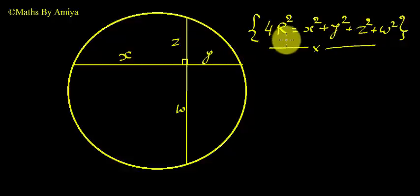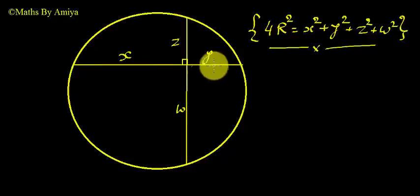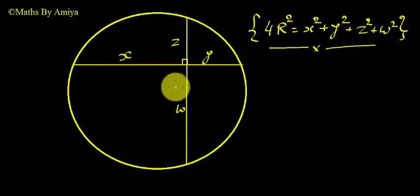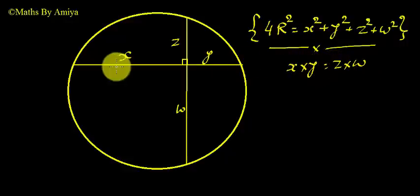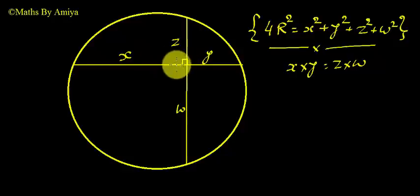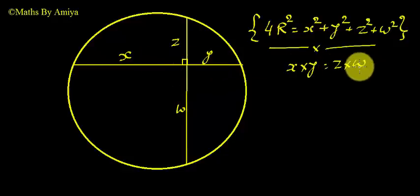Now let us deduce this formula. Before deducing it, you should know two things. First, if we have chords where x, y, z, and w are the two parts of each chord, by the chord product formula we can say x × y = z × w. The product of chord segments from a point of intersection always remains constant.